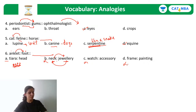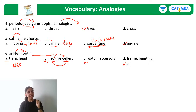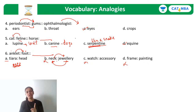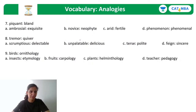To recap the methodology: step one is to identify the relationship between the original pair — same meaning, different meaning, different part of speech, worker and workplace, worker and tool, or gender. Step two is to remember the sequence — the relationship in your chosen answer must follow the same order as in the original pair. Following these steps will help you answer analogy questions quickly and accurately.